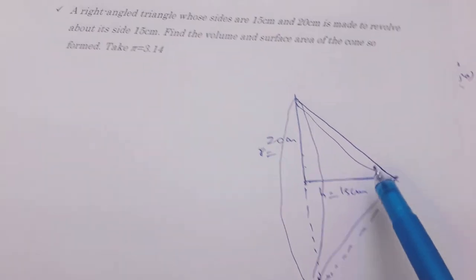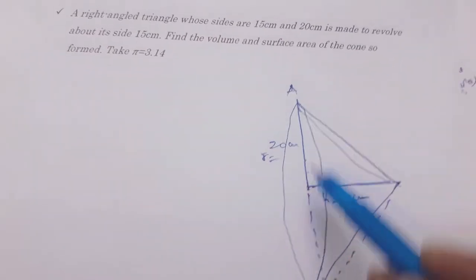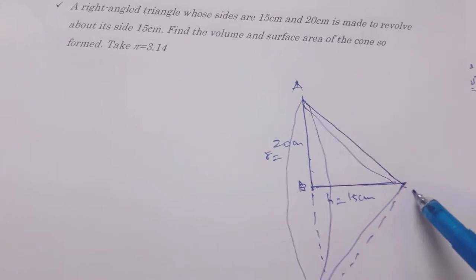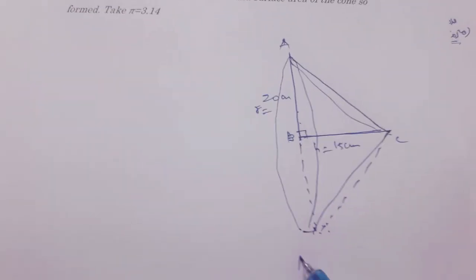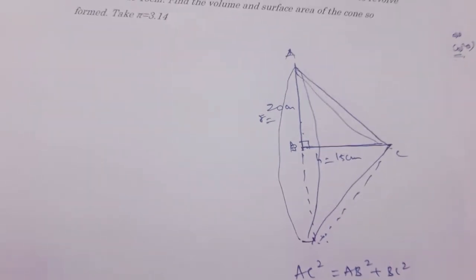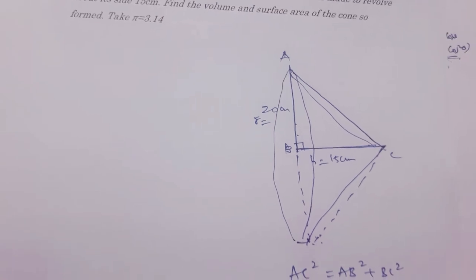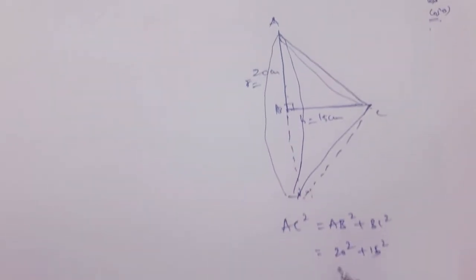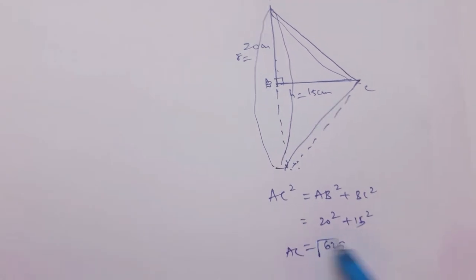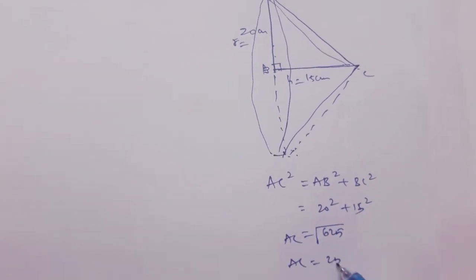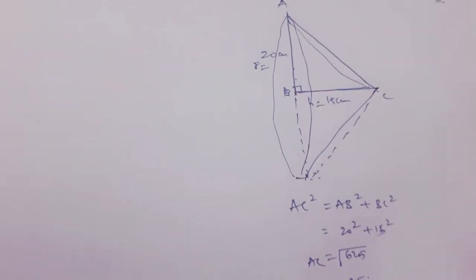So slant height ABC. So slant height we need to apply Pythagorean theorem. AC square equals AB square plus BC square. AB is 20, 15, 625. So AC is 25. Now you got slant height also.